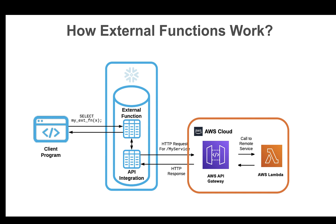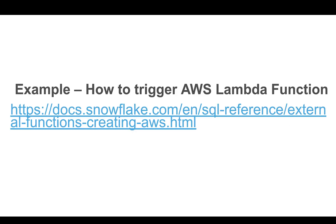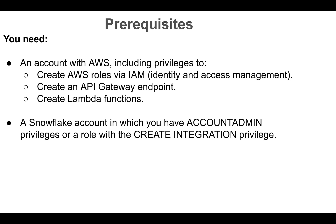Now let's jump into an example and see how we can trigger an AWS Lambda function using external functions. This tutorial follows instructions from the example featured in the Snowflake docs and shows you in more detail how you can trigger Python code running on an AWS Lambda. To complete this example, you will need to have an AWS account where you have the necessary rights to create AWS IAM roles, API gateway endpoints, and Lambda functions. You will also need a Snowflake account with account admin privileges or a role which has create integration rights.